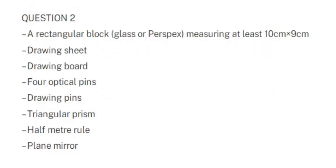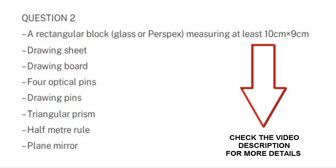For question two, you will have the following specimens: a rectangular glass block or perspex measuring at least 10 cm by 9 cm. This means question two will come from either reflection or refraction of light. Also provided are a drawing sheet, a sheet of paper, an A4 drawing board, and four optical pins.